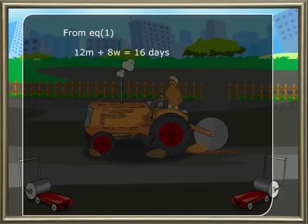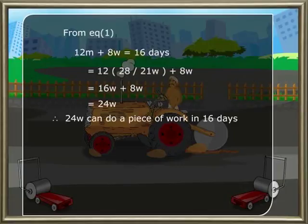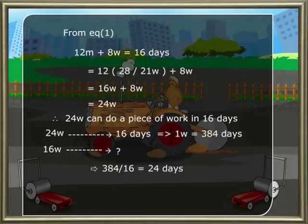From equation one, substituting: 12 × (28/21)W + 8W = 16W + 8W = 24W. So twenty-four women can do that piece of work in sixteen days. Therefore one woman can do it in 384 days.